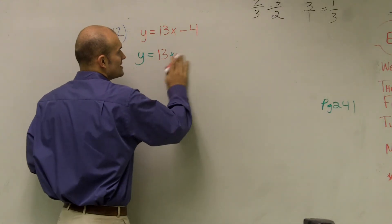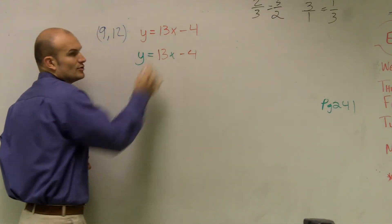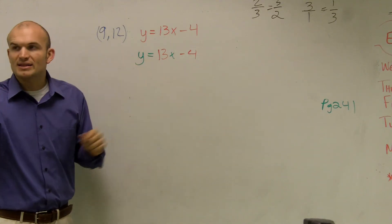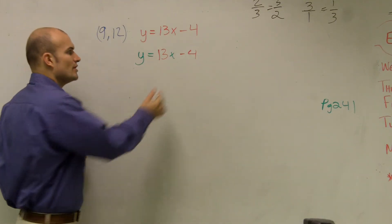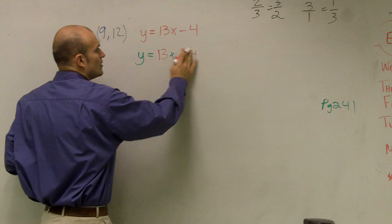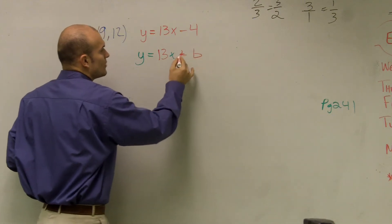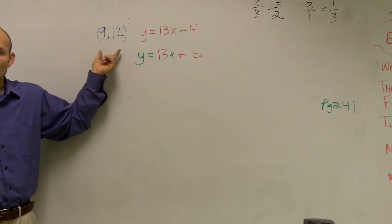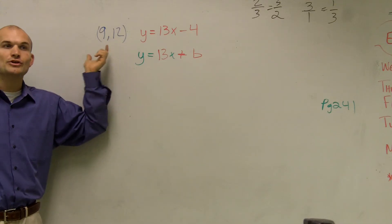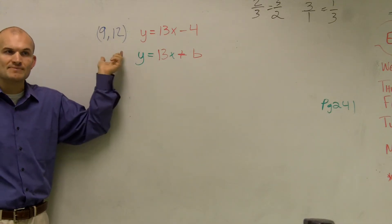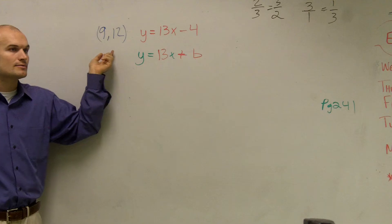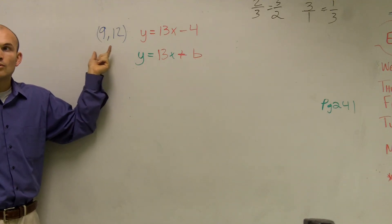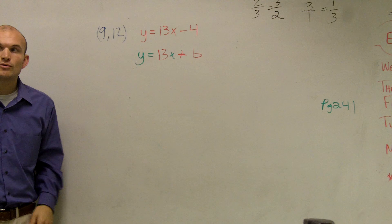If I say the y-intercept of this equation is 4, but the new equation's y-intercept is negative 4, are these two equations the same? Yes, they'd be exactly the same. But they said our equation — we want to know what is the equation of the line that's parallel, but that goes through the point (9, 12). So to determine what my new y-intercept is going to be, I need to find it.